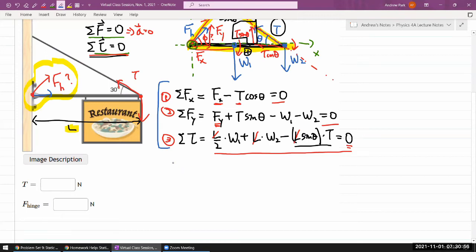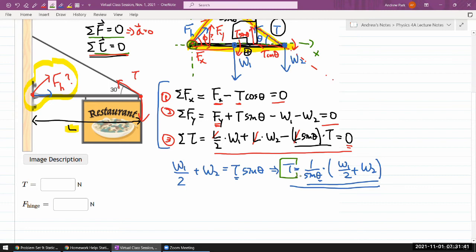I move this over. So I have W1 over 2 plus W2 is equal to T sine theta. Solve for tension. Tension is equal to 1 over sine theta times W1 over 2 plus W2. That makes sense. If theta is very small, then tension has to be very large to provide enough counter torque. So now I can plug in the numbers to get numerical value for this. For the rest of my solution steps, I'm going to treat tension as a known quantity. I'll just use numerical value because I can see that the expression for hinge force is going to get complicated, so I want to make it as simple as possible.